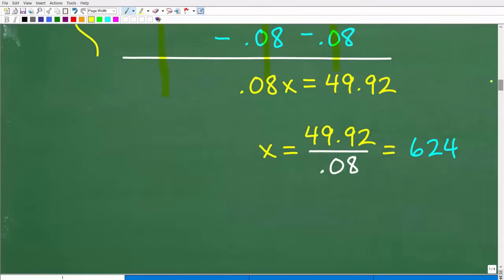So now 0.08 X is equal to 49.92. How do we solve for X? Easy. We're simply going to divide both sides of the equation by 0.08. So now we just go into our calculator and go 49.92 divided by 0.08. You will get 624. Okay. So hopefully you got this right.